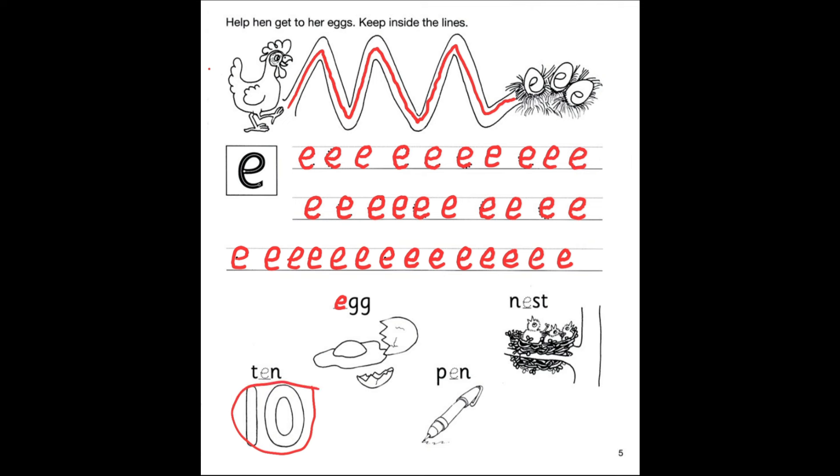What is this? Number 10, 10. E goes in the middle, 10. What is this? Pen, pen. E goes in the middle, pen. And the last one. What are the birds sitting in? Nest, nest. E goes in the middle.